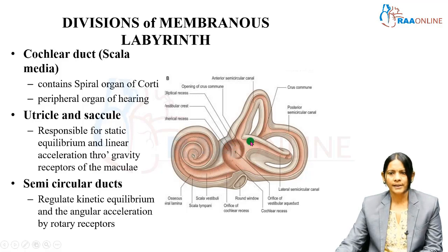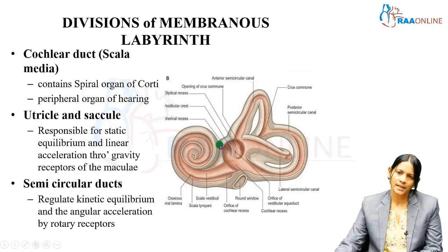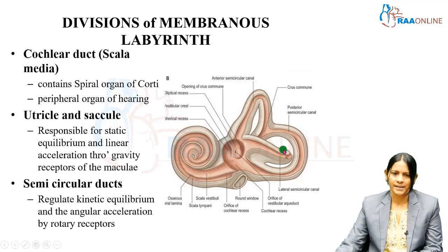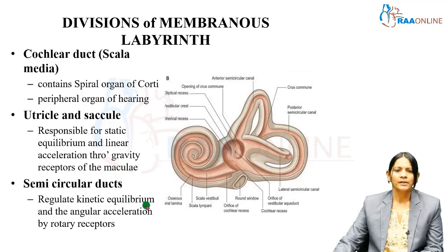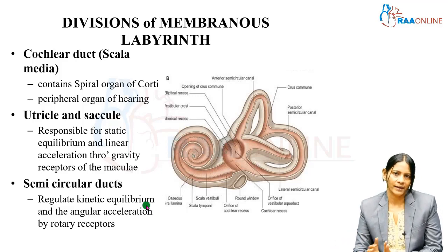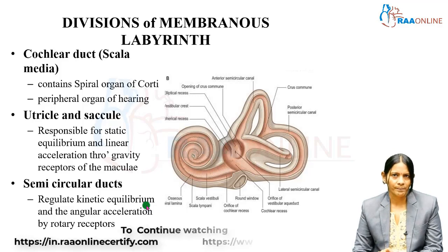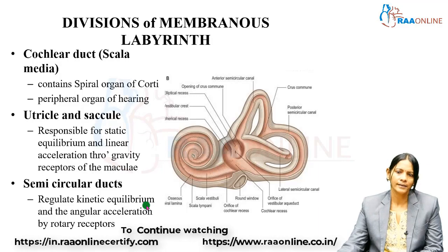The utricle and saccule are in turn connected posteriorly to the semicircular ducts. The semicircular ducts are housed within the semicircular canals — so semicircular canals are the bony labyrinth, and the semicircular ducts are the membranous labyrinth. The semicircular ducts regulate kinetic equilibrium; they are responsible for maintaining balance during rotation, i.e., angular acceleration. Unlike the saccule and utricle which handle linear acceleration, when we rotate the head in the same plane with no gravity change involved, the balance and equilibrium during that rotational movement of the head is regulated by the semicircular ducts.